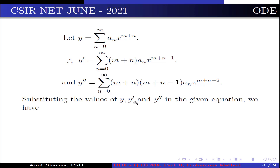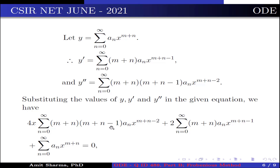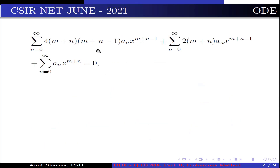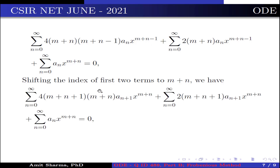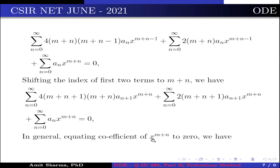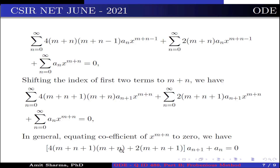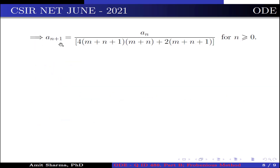Substituting the values of y, y', and y'' into the given equation and simplifying, we obtain a combined series equation. After shifting the index of the first two terms to x^(m+n) by replacing n with n+1, equating the coefficient of x^(m+n) to zero gives: 4(m+n+1)(m+n) aₙ₊₁ + aₙ = 0. This yields the recurrence relation: aₙ₊₁ = −aₙ / [4(m+n+1)(m+n+2)(m+n+1)] for all n ≥ 0.